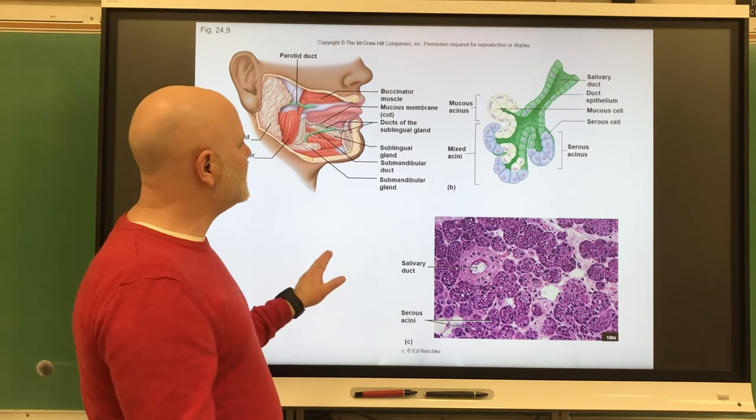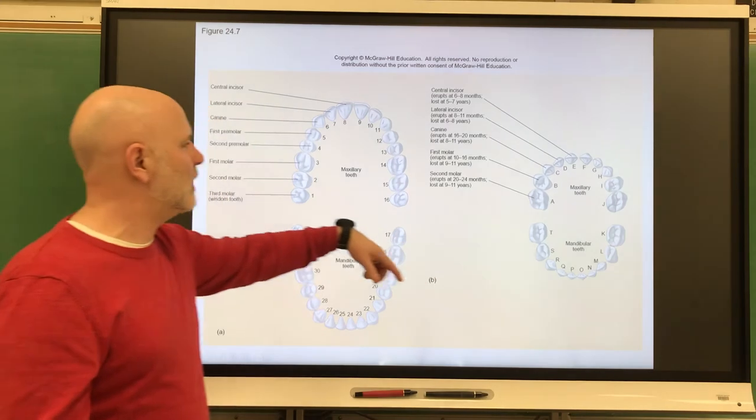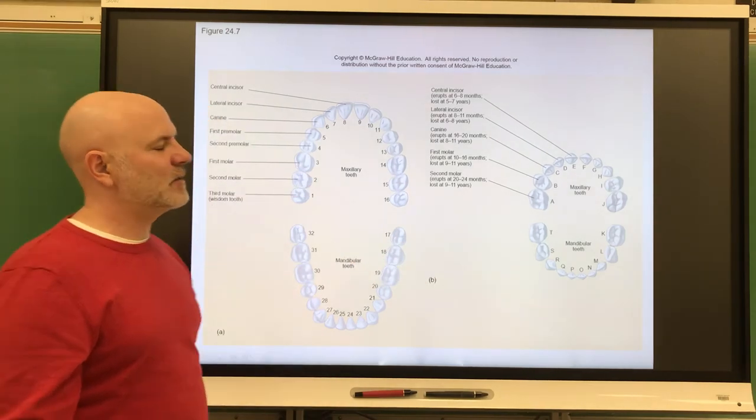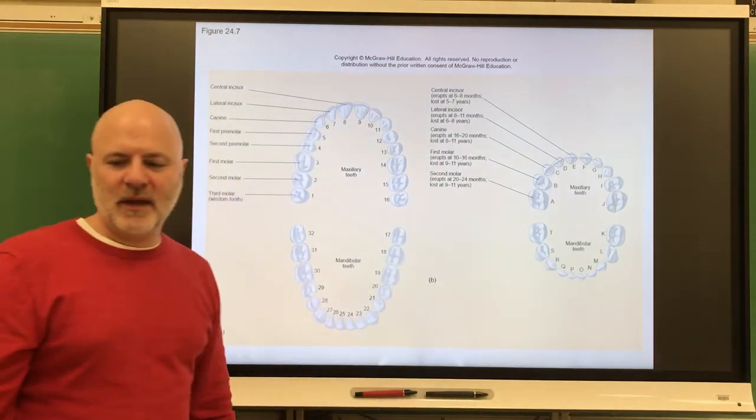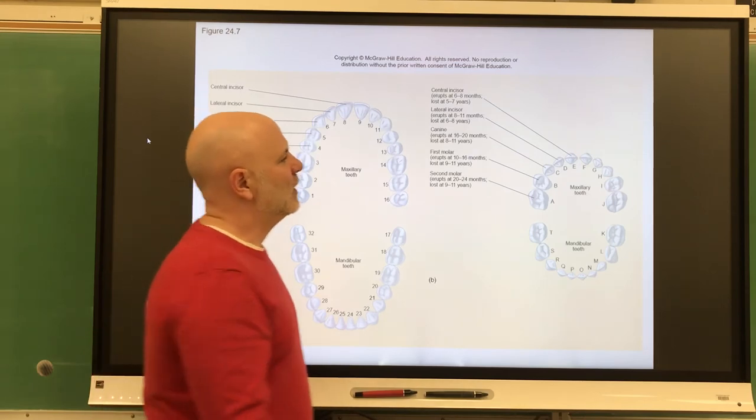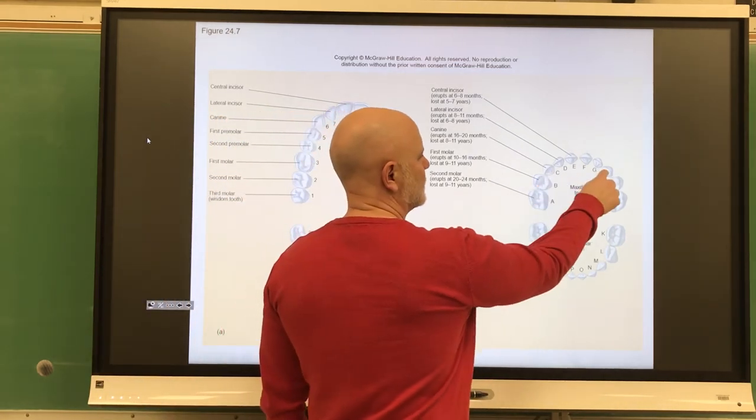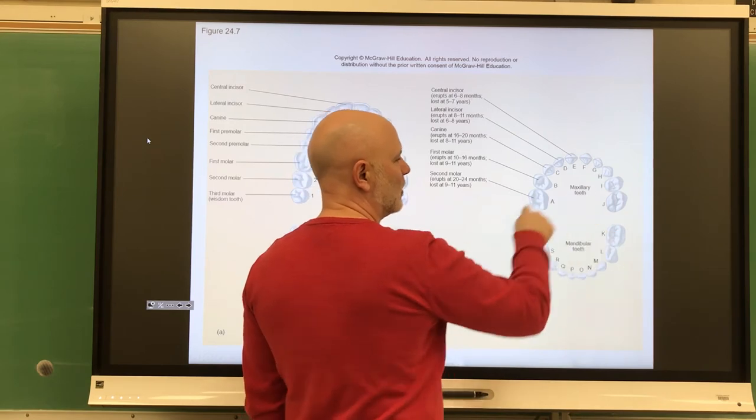Now let's look at teeth. We have primary teeth on the right side here, secondary teeth, the permanent teeth on the left. We get 20 primary teeth. We get eight incisors, four on the top, four on the bottom. We get four canines or cuspids. So those are the next teeth along there. And then we have eight molars here.